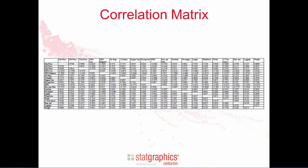When there are many variables, it's common to display the correlations in the form of a matrix. Each cell of this matrix shows the correlation between two variables — the row variable and the column variable. Unfortunately, it's difficult to see what's going on in a tabular display like this.